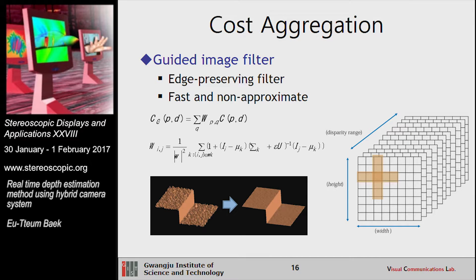However, there are many errors and noise in the cost volume, so we use a guided image filter. This filter is one of the edge-preserving filters, which can suppress noise while preserving meaningful structure. It is much faster than the bilateral filter. W represents the weighted kernel and C represents the cost volume.